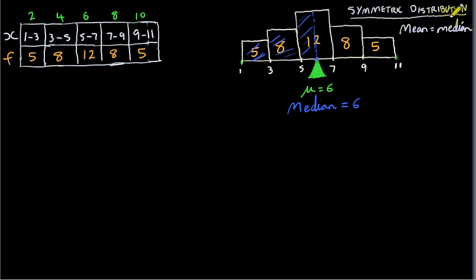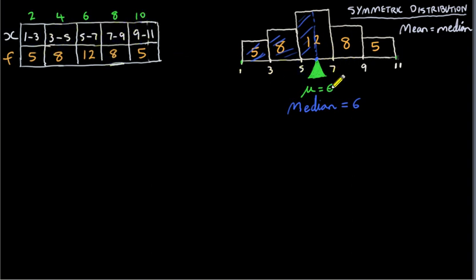We call this a symmetric distribution rather than just a symmetric histogram. If our histogram is symmetric, then the corresponding probability distribution will also be symmetric, and the mean is equal to the median. By the way, if we're dealing with a population, the mean is denoted mu. If this is a sample from a population, we denote the mean by x-bar.